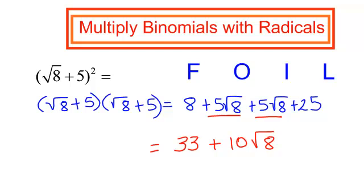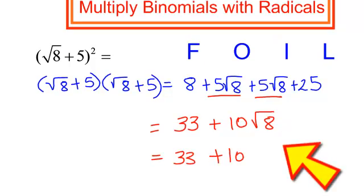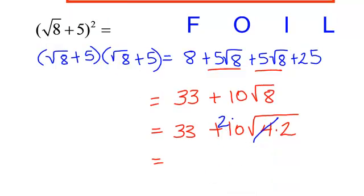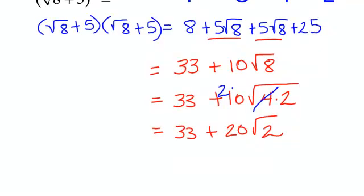Do you think you're done? You're not done. Radical 8 can be simplified — I will break 8 down into 4 times 2. 4 is a perfect square, and when it comes out it is 2. So I will have 33 plus 20 radical 2, since 2 times 10 is 20 radical 2.